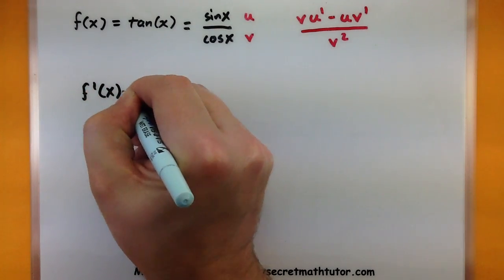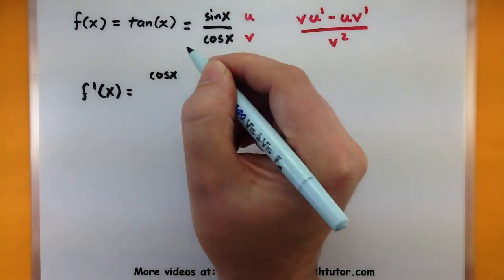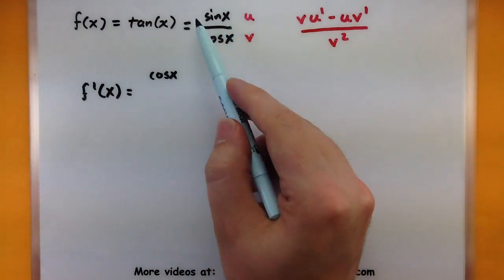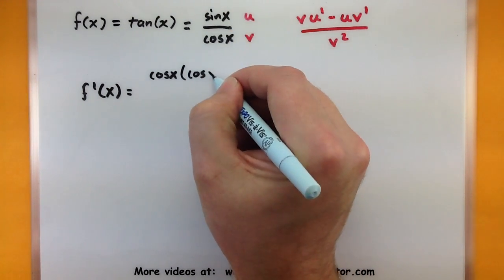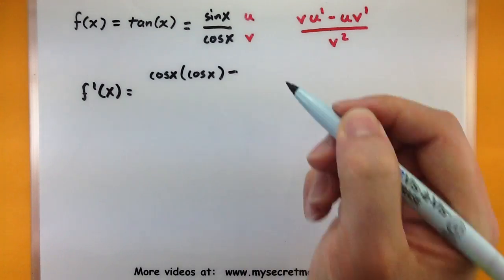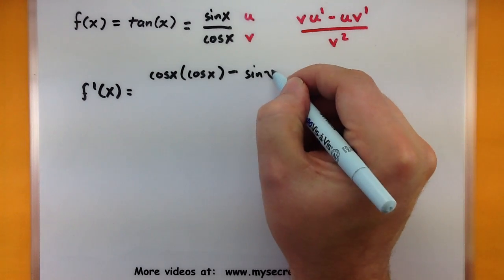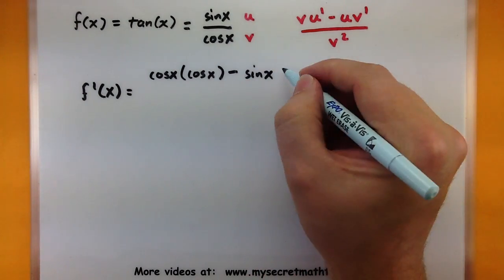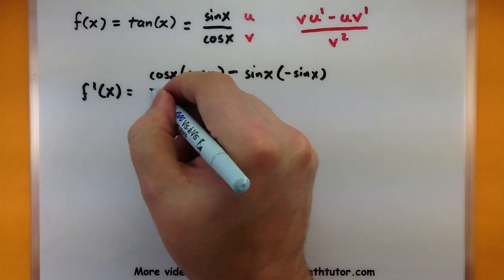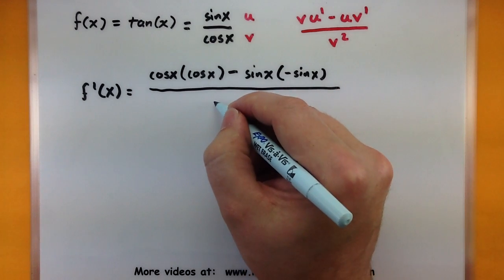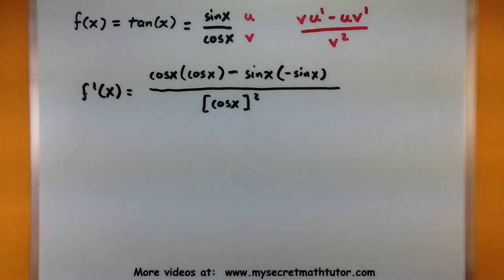So f prime of x. We'll start off with our lower function. Cosine of x multiplied by the derivative of our top function. So the derivative of sine is cosine. Minus. Now we have our top function. So there's sine of x multiplied by the derivative of the bottom. And the derivative of cosine is negative sine. All over the bottom function squared.